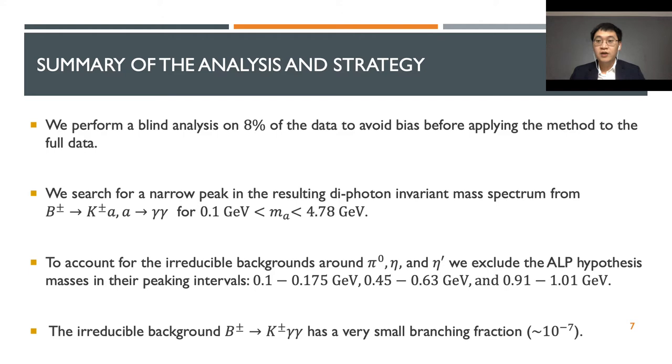Eventually, we want to look for a narrow peak of the diphoton invariant mass spectrum from the B meson decay into K-on and axion, and then axion decay into diphoton. Because we search for axion-like particles in the mass range from 0.1 GeV to the maximum allowed mass in this process, 4.78 GeV, we expected to see background peaking from standard model meson resonances: pion, eta, and eta-prime. To account for this irreducible background, we exclude axion hypothesis masses in their peaking interval. The other irreducible background comes from the B meson decay into K-on and a pair of photons, which has a very small branching fraction, thus subdominant.